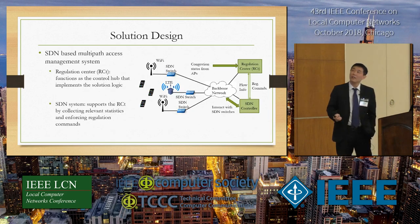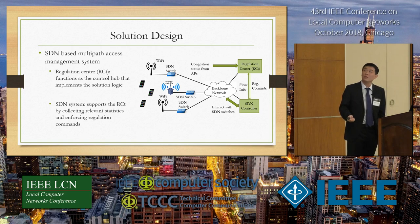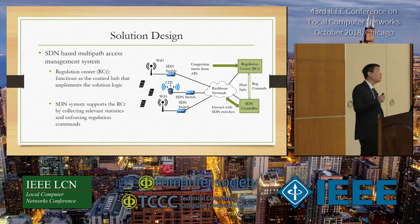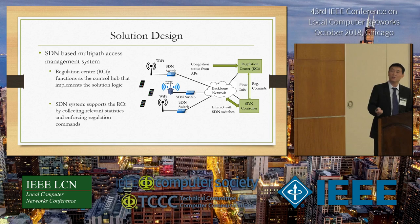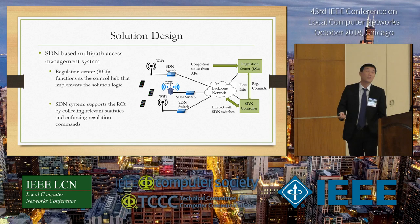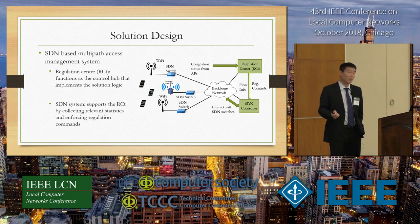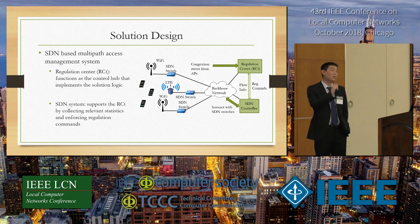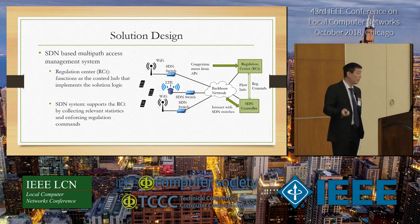The overall SDN-based multipath management system has two major components: a regulation center and an SDN system. The regulation center functions as a control hub to implement the solution logic. The SDN system is a supporting system that collects necessary statistics and feeds them to the regulation center to make decisions. The regulation center then issues regulation commands and uses SDN to enforce them.